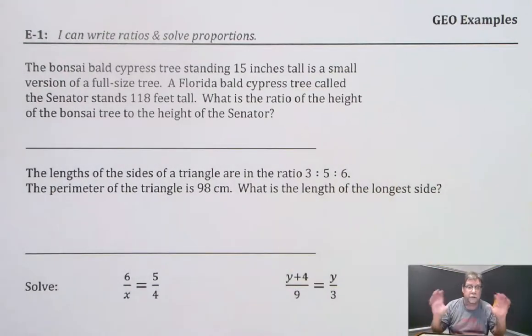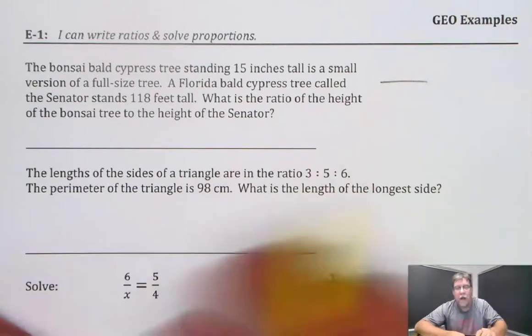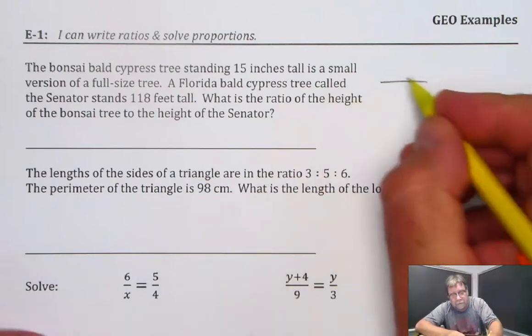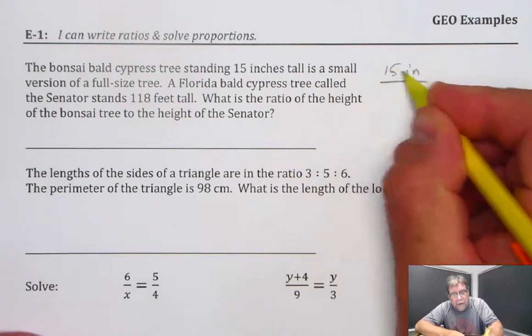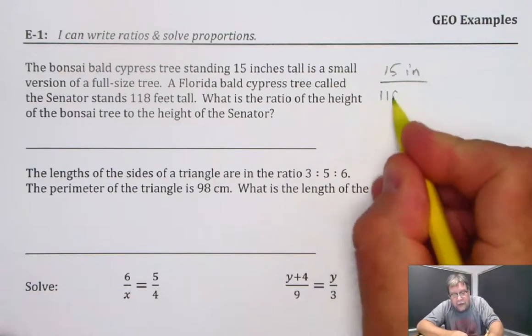I'm going to use a fraction because that's the way I like to write my ratios. So there's my fraction bar. I'm going to put the height of the smaller tree on top, and it's 15 inches. The height of the larger tree would go on the denominator. That's 118 feet.